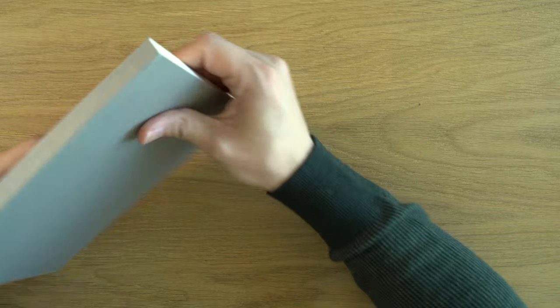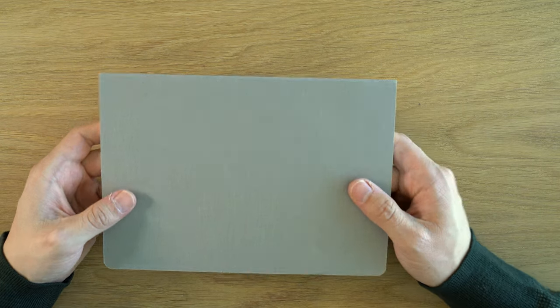So that is it. That is the Misubi Folio Tomoe River Notebook. So what are my pros and cons for the Misubi Folio Tomoe River Notebook?